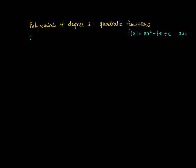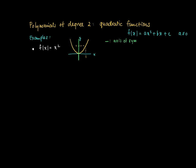In this clip we're going to look at quadratic functions. These are functions f(x) = ax² + bx + c, such that a is not equal to zero. For example, the most trivial case is f(x) = x². If we draw the x-axis and the y-axis, as a graph we see a parabola opening upward with the top at zero. The axis of symmetry is given by the line x = 0.